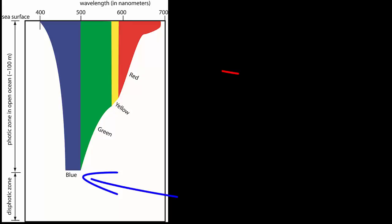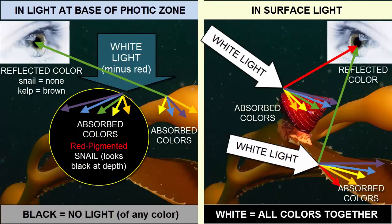Blue light remains the longest and descends the deepest before being completely absorbed; red light is absorbed first. This means that objects with red pigment will have no red light to reflect and will absorb all available light, appearing black. That is a strategy used by organisms living in the lowest areas of the photic zone — by having red pigment, they appear black and fade into the surrounding darkness.